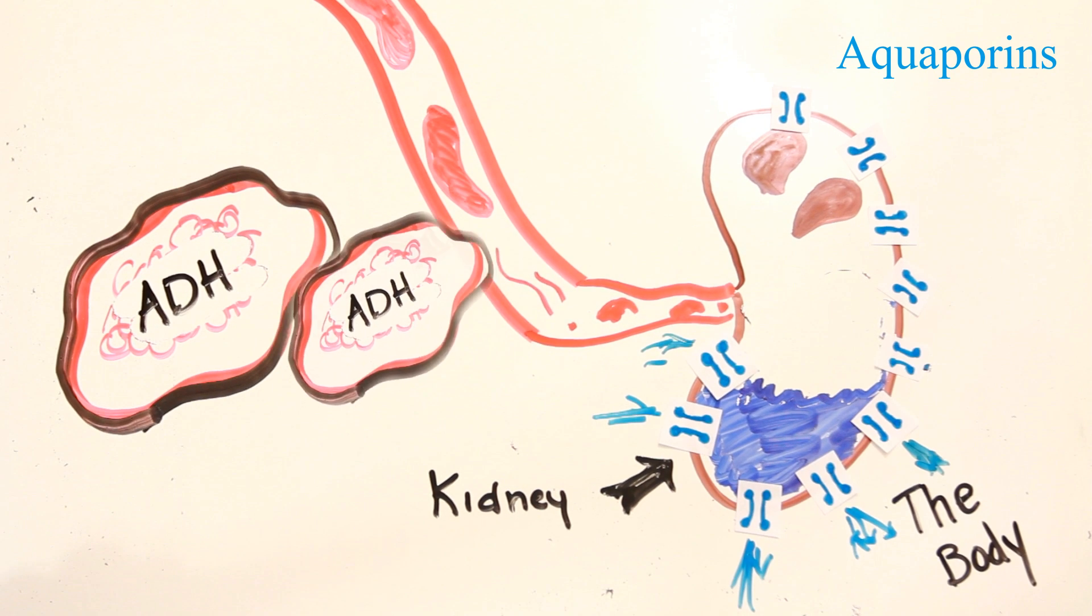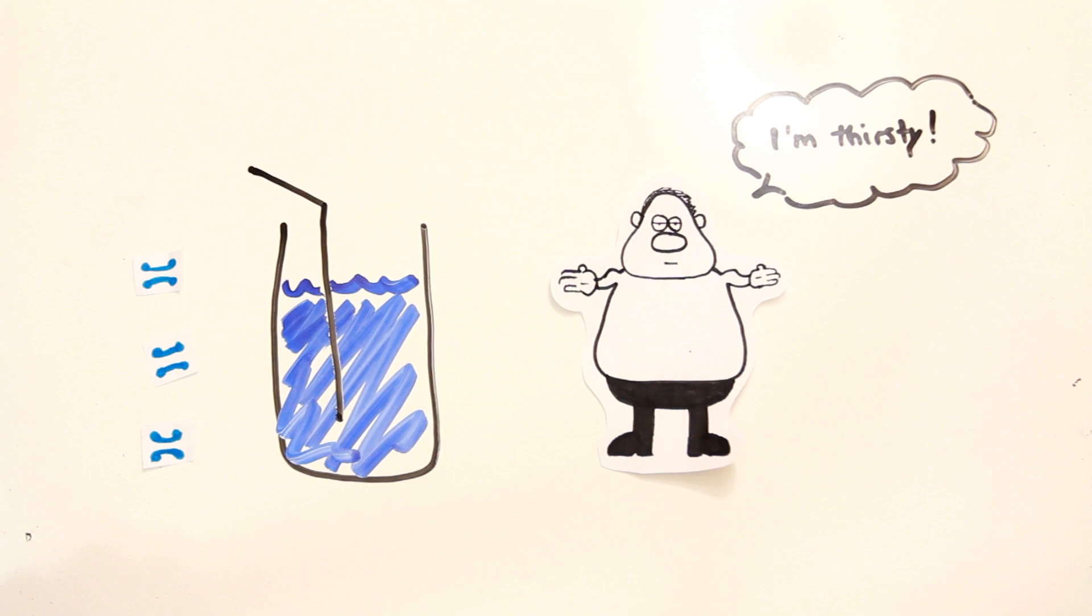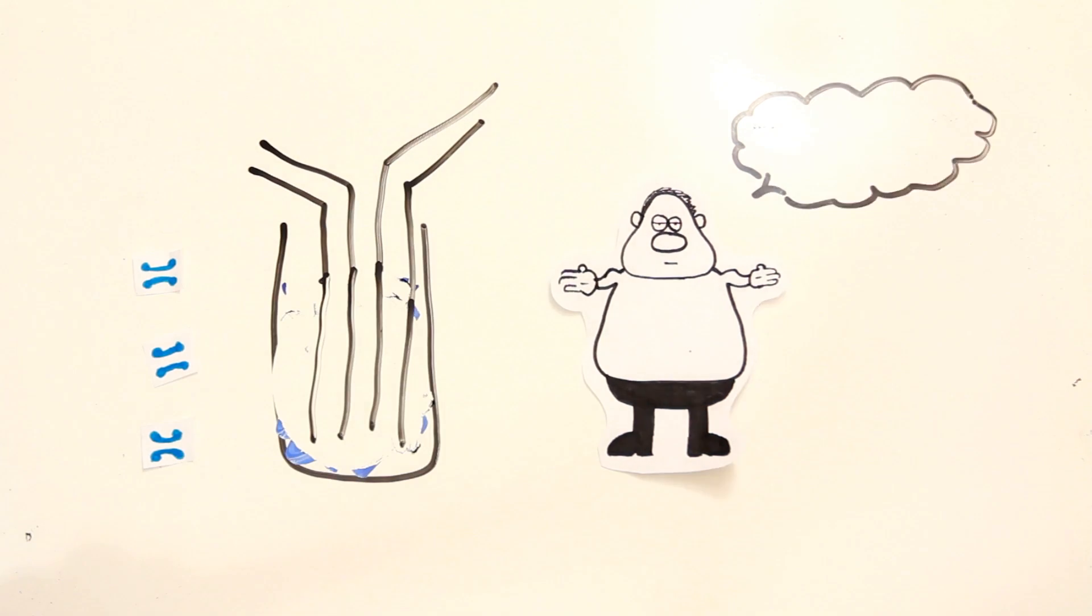So with less water, you get more ADH, which means greater production of aquaporins and more water reabsorbed. So instead of letting you pee it out, you keep it in. Think of it like a glass of water when you're really thirsty. The aquaporins act like a straw and allow for the water to flow back into your body. More straws equals more water reabsorbed.